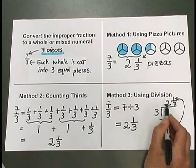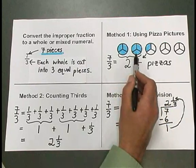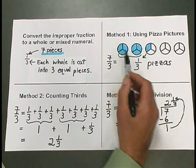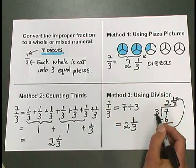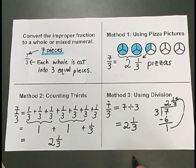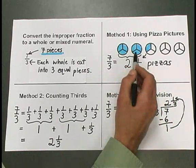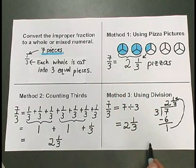Notice that the 2 that I get here is the same as the 2 whole pizzas that we shaded. When I say 2 times 3 is 6, the 6 that I subtract stands for the 6 pieces that we get from those 2 whole pizzas.